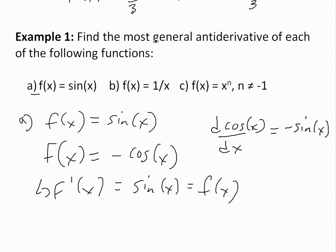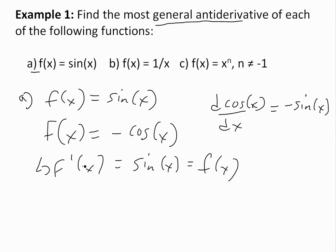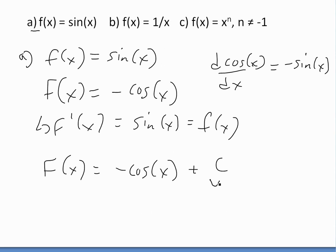The example asks for the most general antiderivative, so we always have to add a constant. The most general antiderivative is F(x) = −cos(x) + C, where C is an arbitrary constant. We add this because the derivative of any constant is 0, so −cos(x) + 2 and −cos(x) + 3 have the same derivative.